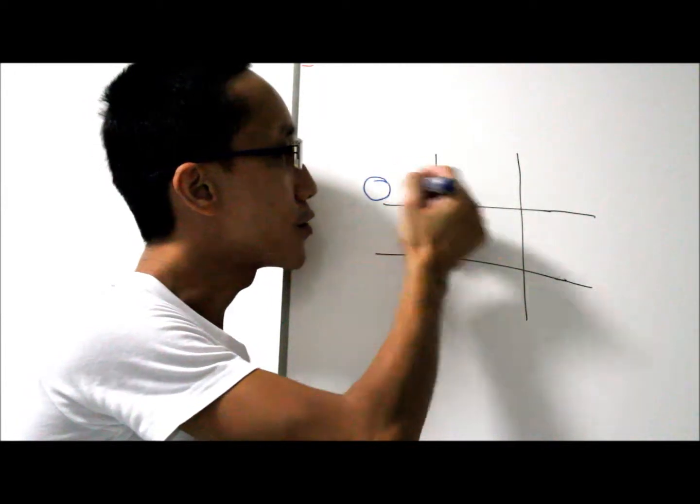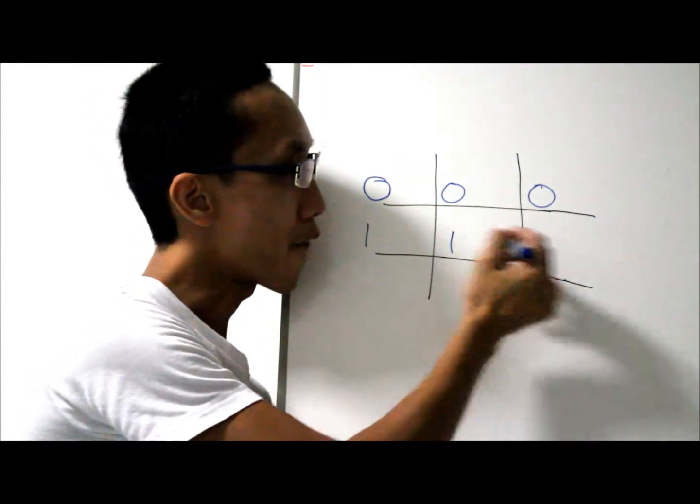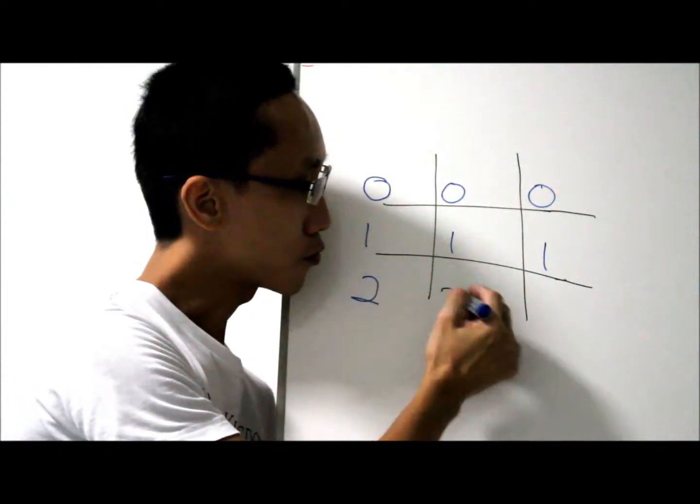Write down the numbers 0, 0, 0, 1, 1, 1, 2, 2, 2.